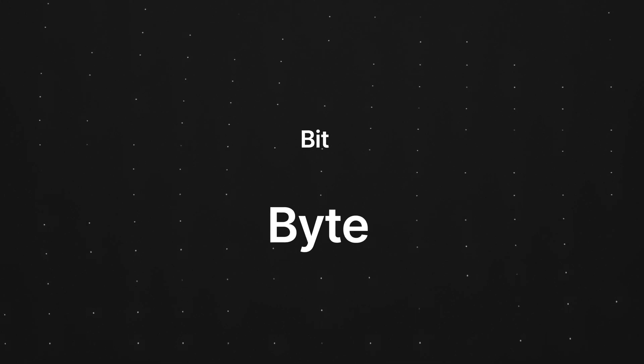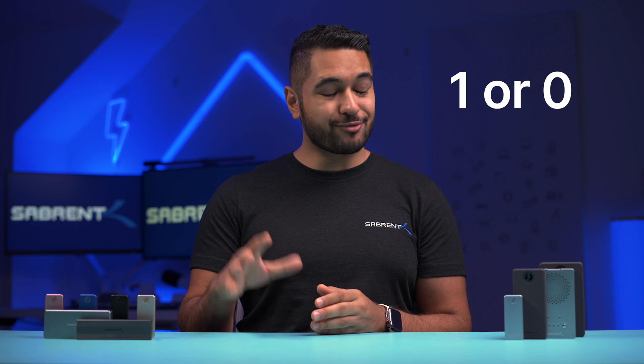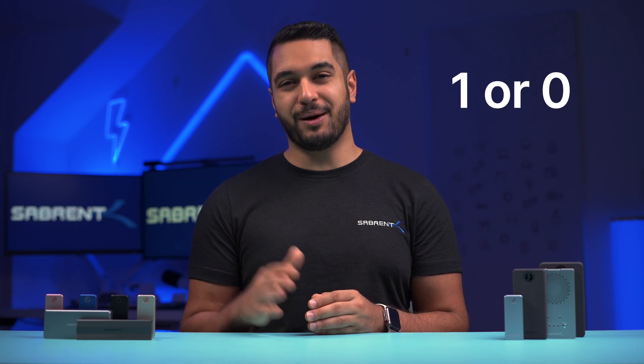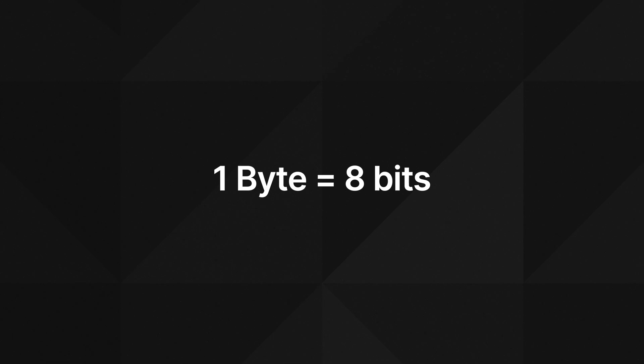To put it simply, a bit is the smallest unit of data. A bit can either be represented with a one or a zero, so it doesn't get much smaller than that in the digital world. A byte, on the other hand, is also a unit of data but represents a slightly larger unit of measure. A byte consists of eight bits, so a string of eight numbers like 00001111 would take up eight bits but only one byte.